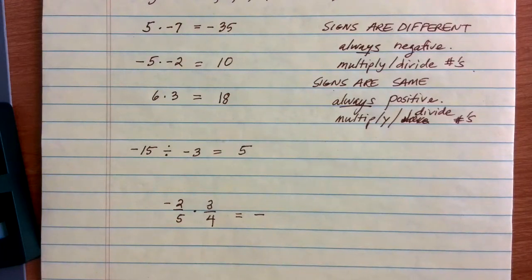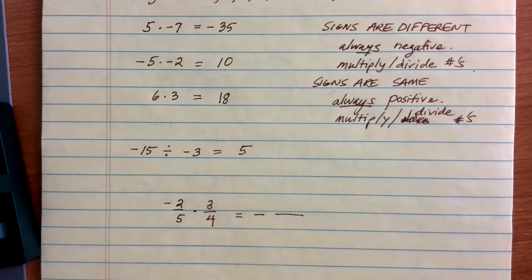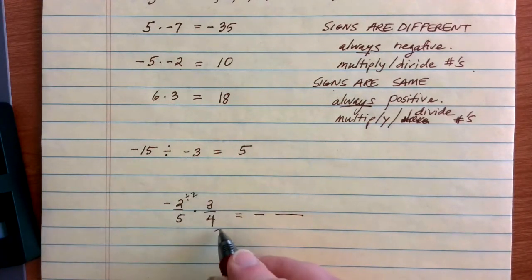Once I've decided the sign of my answer, I can go ahead and do the multiplication like I normally would. With our multiplication, we're going to multiply across the top and the bottom, but we can look to see if we can simplify anything along the way. In this case, 2 goes into both the top and the bottom, so I can reduce things a little bit.